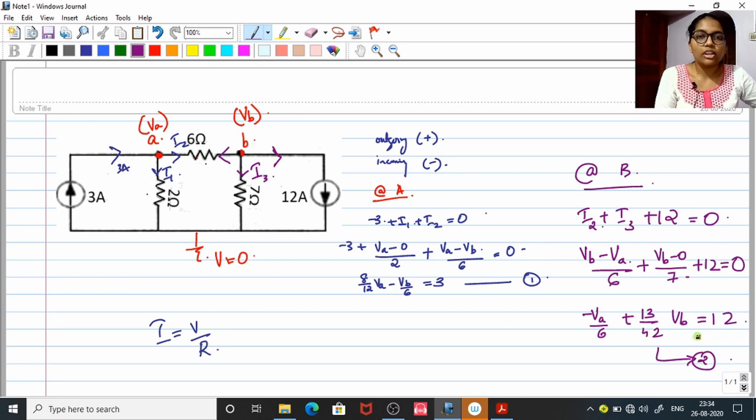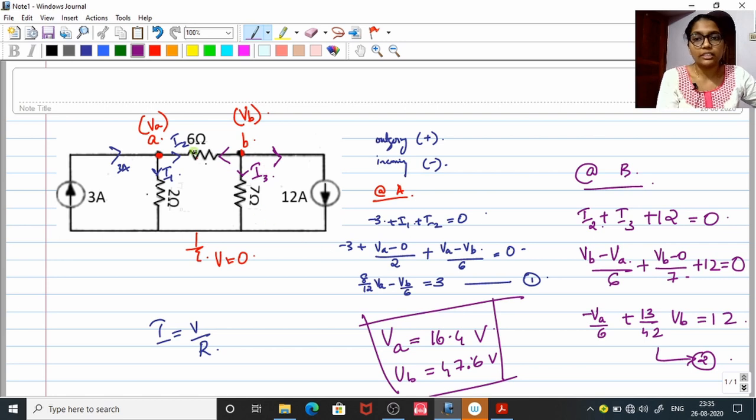Now you can easily solve these two equations using calculator equation mode. So your value is about VA is equal to 16.4 volt and VB is equal to 47.6 volt. Note however, we have to find the current which is passing through 6 ohm. Current through 6 ohm is, VB potential is greater than VA potential. So current through 6 ohm is VB minus VA divided by 6 which is about 5.2 amps.